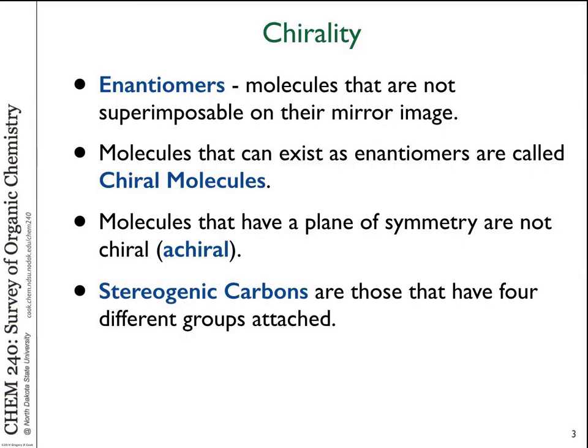Chiral molecules often have a specific carbon with four different groups attached — that's what we call the stereogenic carbon. A molecule can certainly have more than one stereogenic carbon. We have molecules with lots of stereogenic carbons in them, which means there are actually many possibilities for different stereoisomers, which we're going to talk about more today.